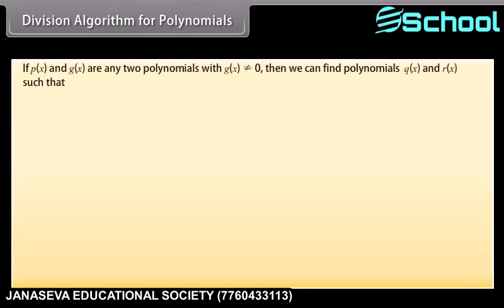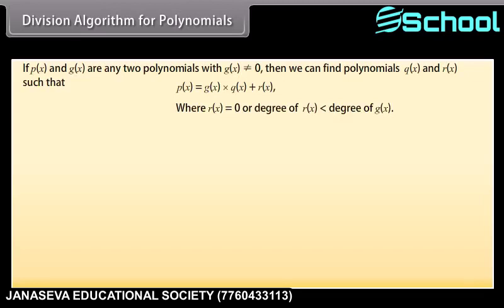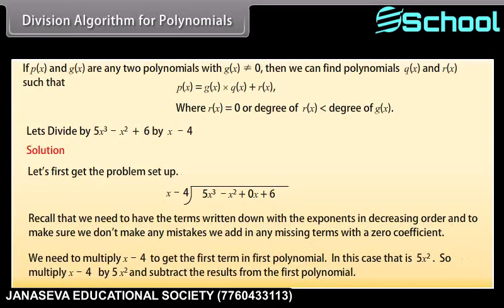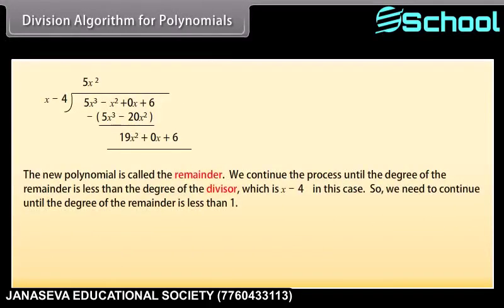If p(x) and g(x) are any two polynomials with g(x) not equal to 0, then we can find polynomials q(x) and r(x) such that p(x) equals g(x) times q(x) plus r(x), where r(x) equals 0 or the degree of r(x) is smaller than the degree of g(x). Let's divide 5x cubed minus x squared plus 6 by x minus 4. We need terms written with exponents in decreasing order and add any missing terms with a zero coefficient. We multiply x minus 4 to get the first term, which is 5x squared, then subtract the results. The new polynomial is called the remainder, and we continue until the degree of the remainder is less than the degree of the divisor.